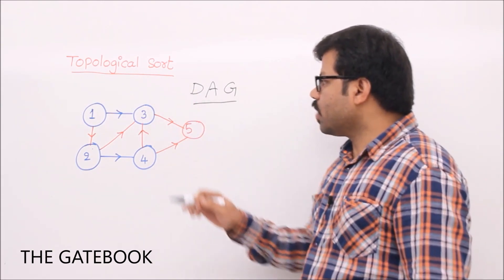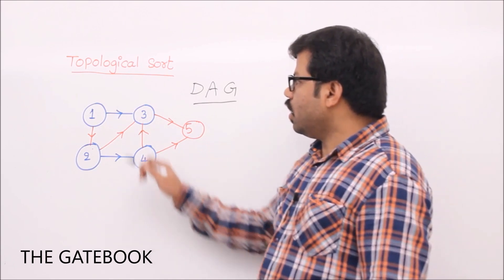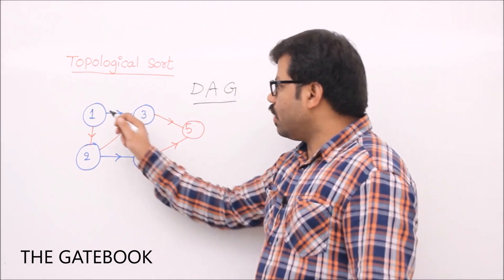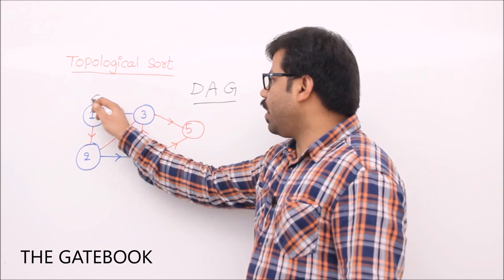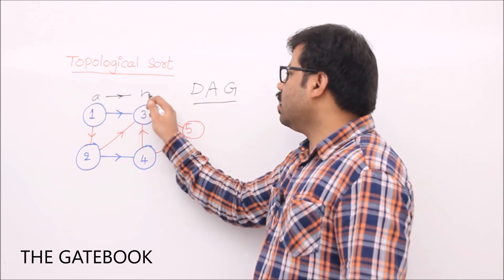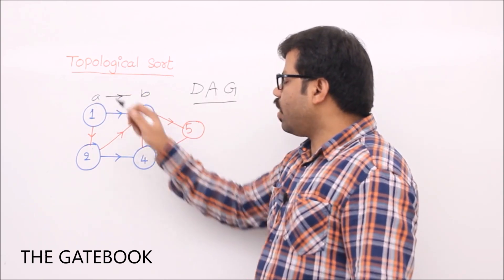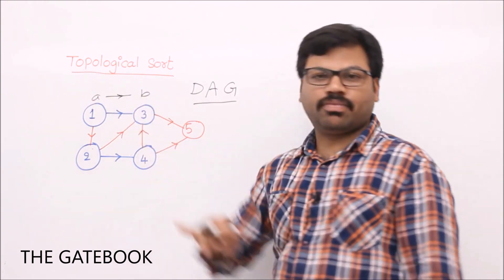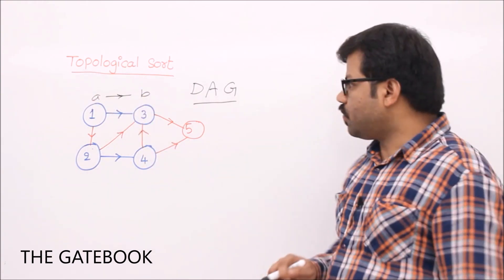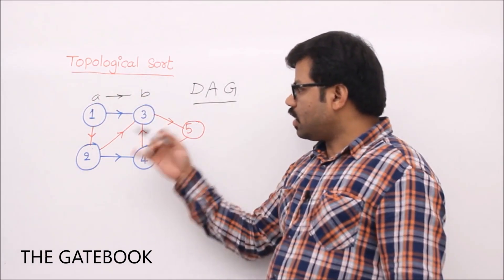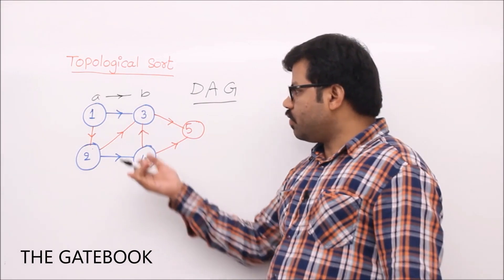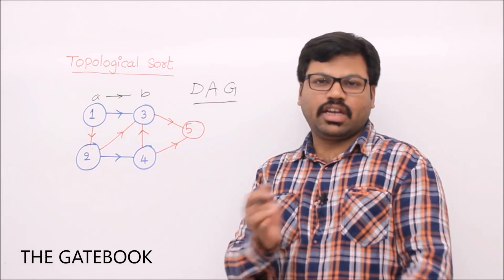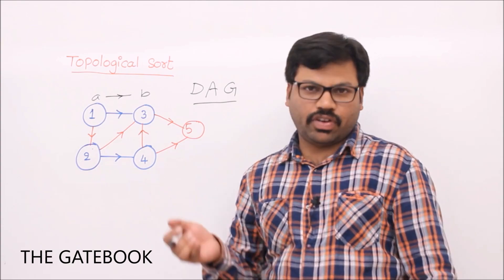What is topological sort? We sort the elements based on their priorities. Whenever there is an edge from A to B in the graph, we say there is a requirement that B should be finished after A. That kind of requirement we store in a directed graph, which is the best suitable structure for such requirements.